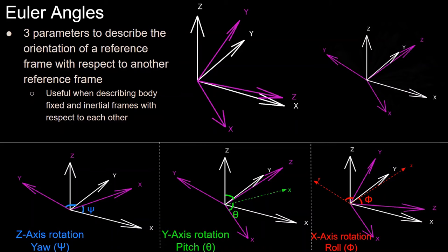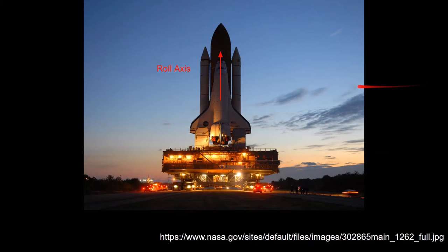Instead, what Euler angles do is describe an orientation with three angles corresponding to the body fixed system, which is a lot easier for humans to visualize.